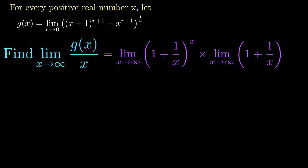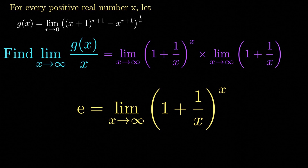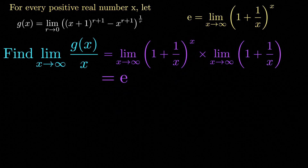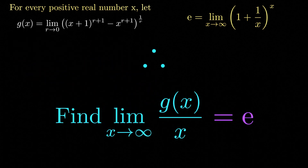We can rewrite this as the limit as x goes to infinity of 1 plus 1 over x, all raised to x, multiplied by the limit as x goes to infinity of 1 plus 1 over x. Using the fundamental limit that e equals the limit as x goes to infinity of 1 plus 1 over x all raised to x, the first limit equals e. The second limit equals 1, since 1 over x goes to 0 as x goes to infinity. Therefore the limit as x goes to infinity of g of x divided by x is equal to e.